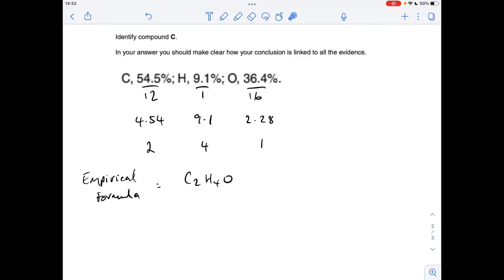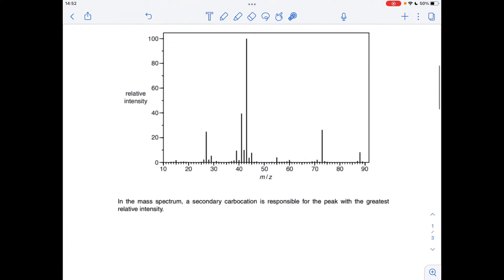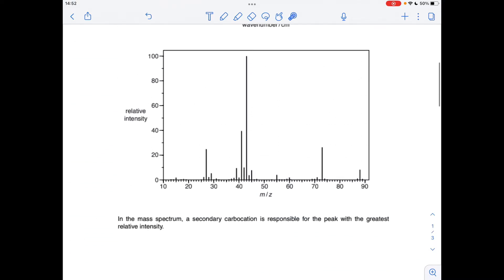I'm going to calculate the Mr of that which comes out at 44, so the next thing I need to do is go straight to the mass spectrum and find the molecular ion peak, which is the peak furthest to the right, so it's that one there.